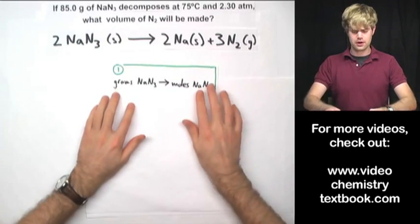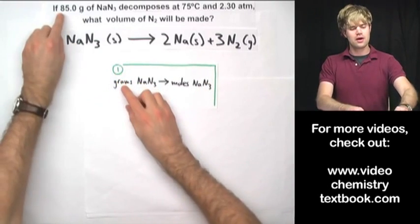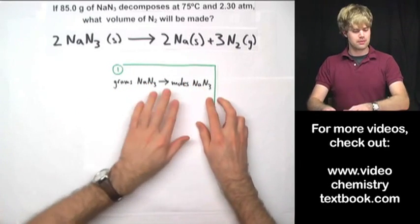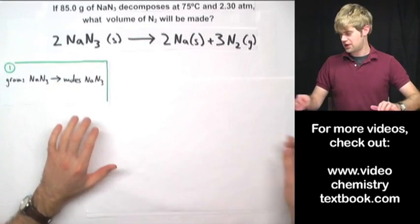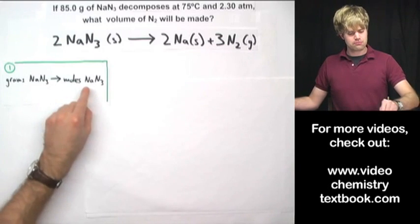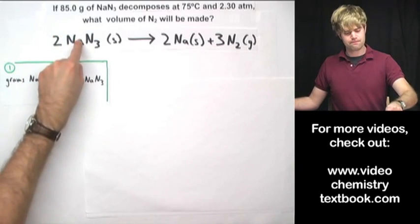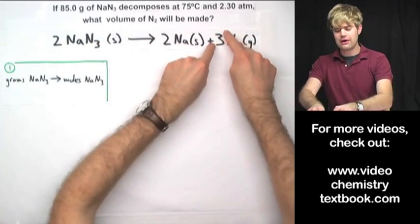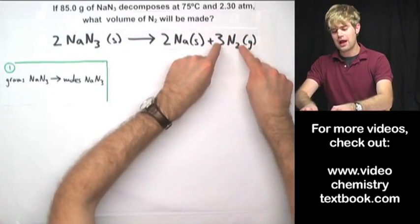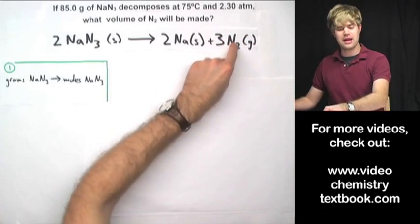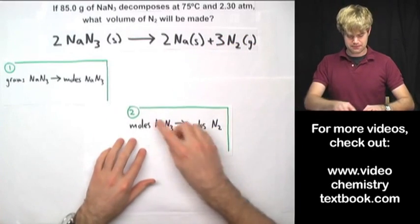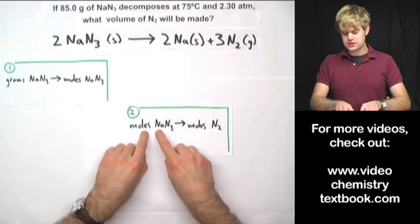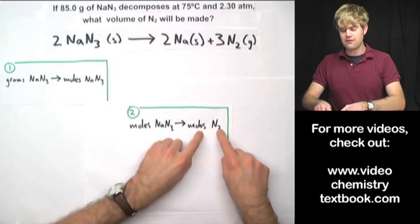The first thing I'm going to want to do — step one — is take the grams of sodium azide and convert those to moles of sodium azide. After I have the moles of sodium azide, step two is to use that number to figure out how many moles of N2 I'm going to end up getting.